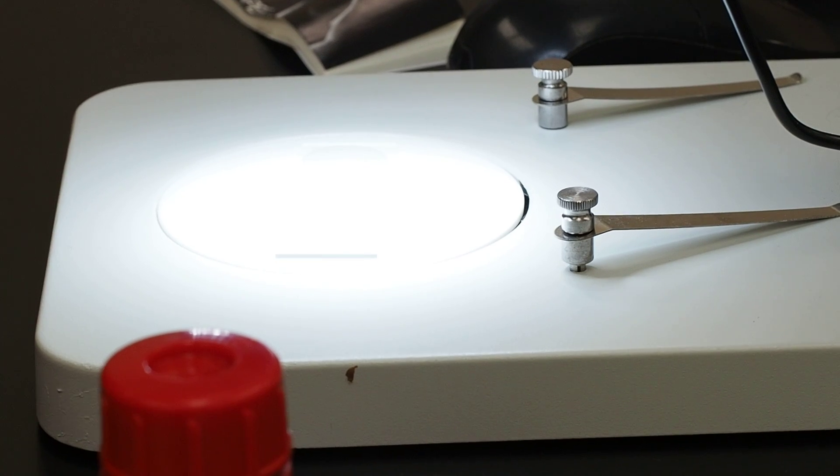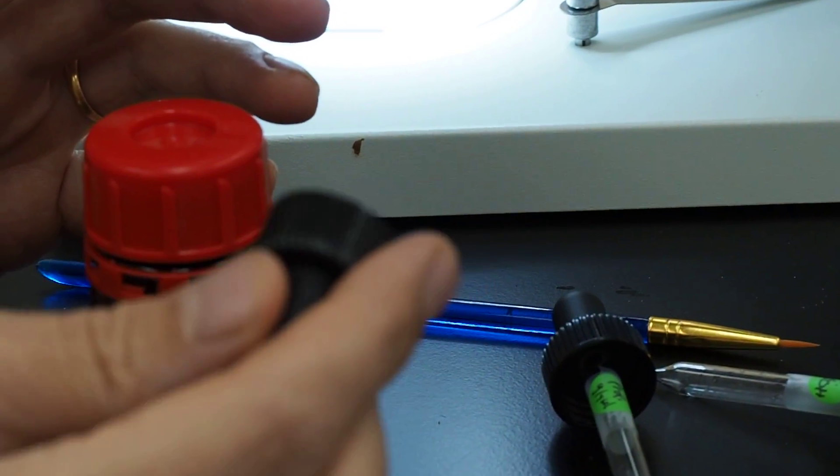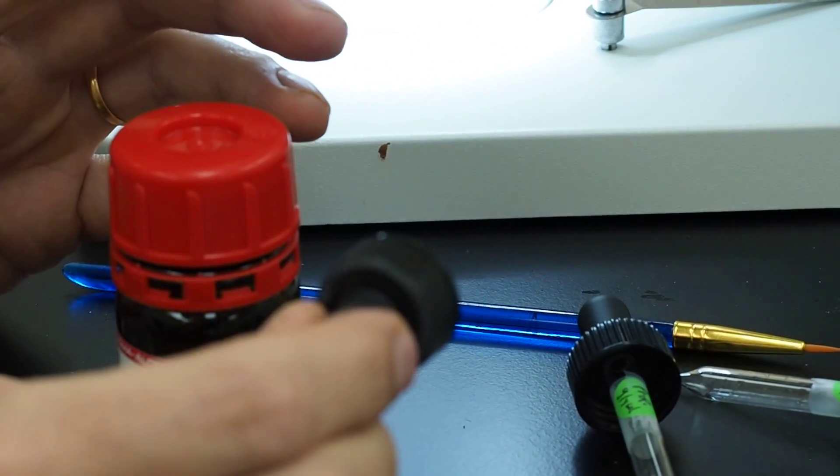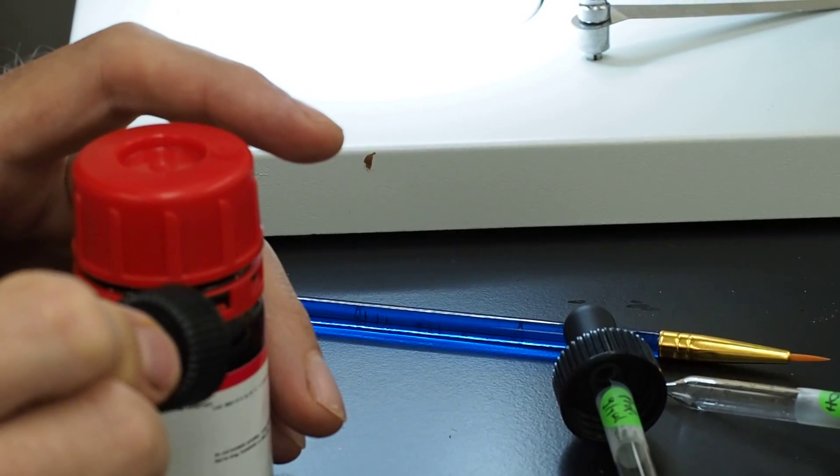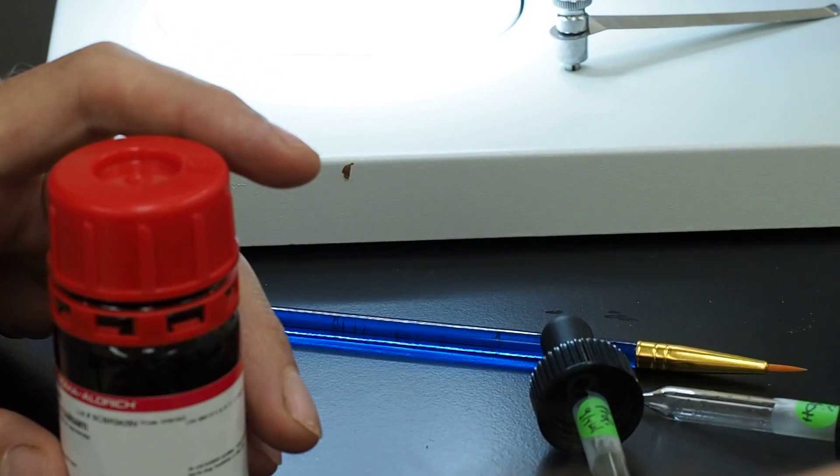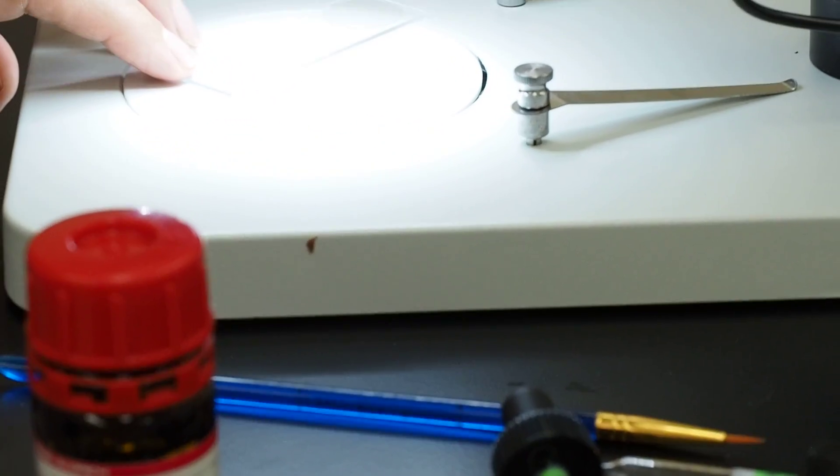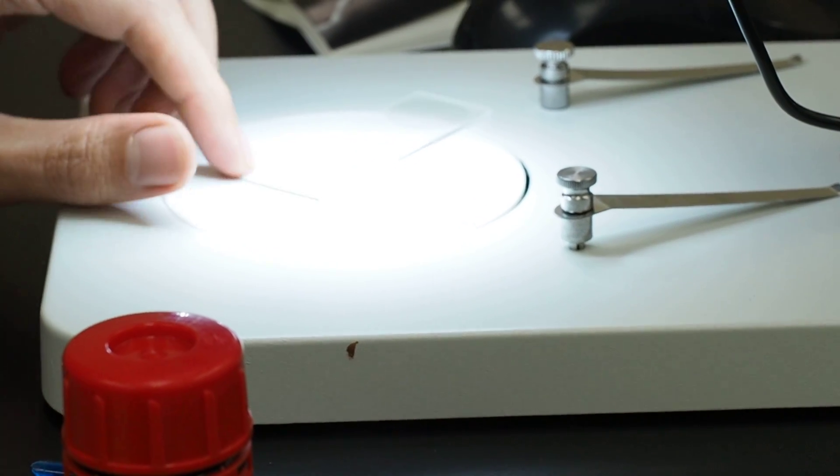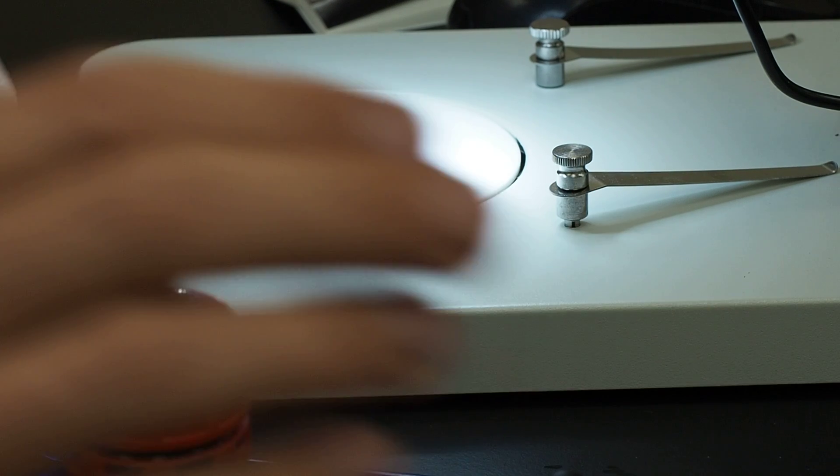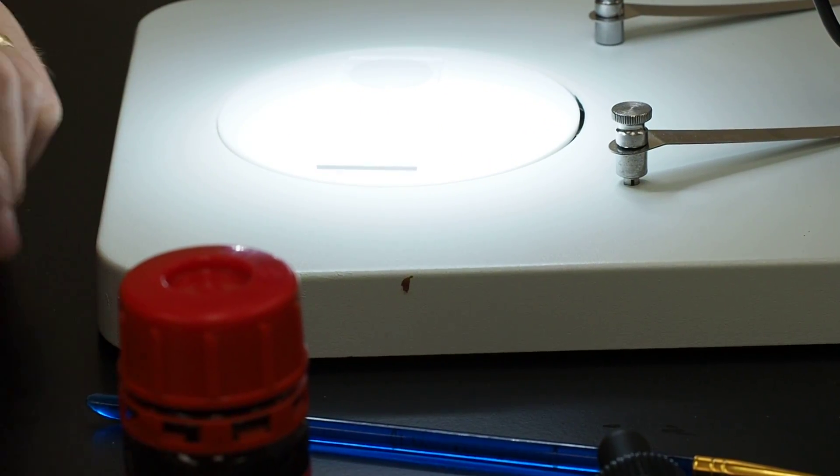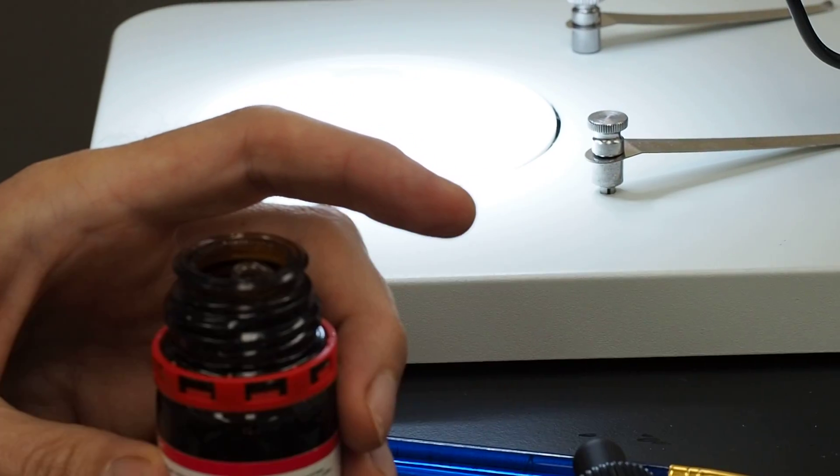So now I have our Canada balsam and I've taken one of the glass pipettes off of its bulb and put it inside there. So the next step then is we've got to put a droplet of Canada balsam on our microscope slide.